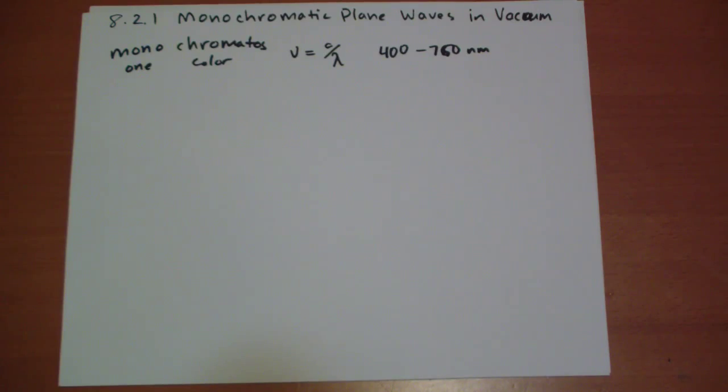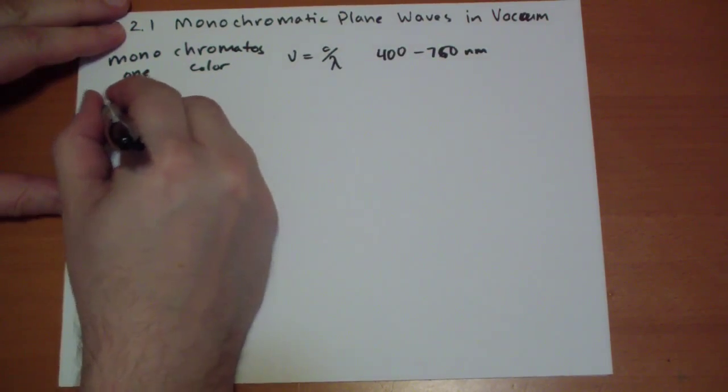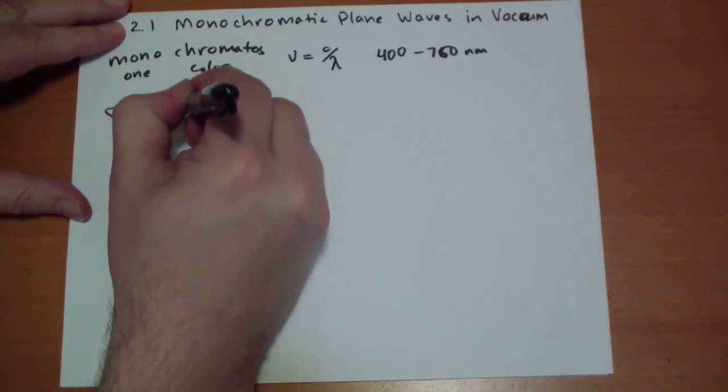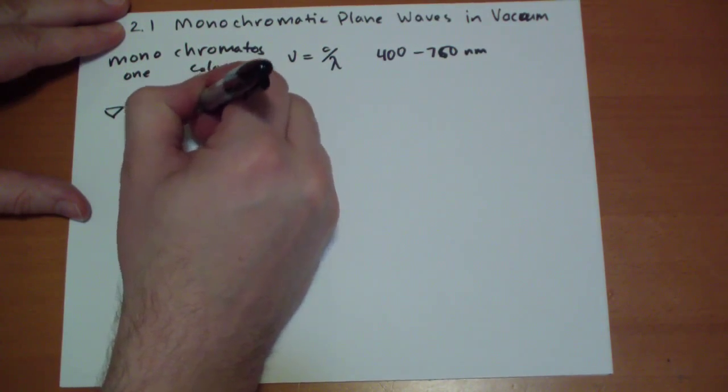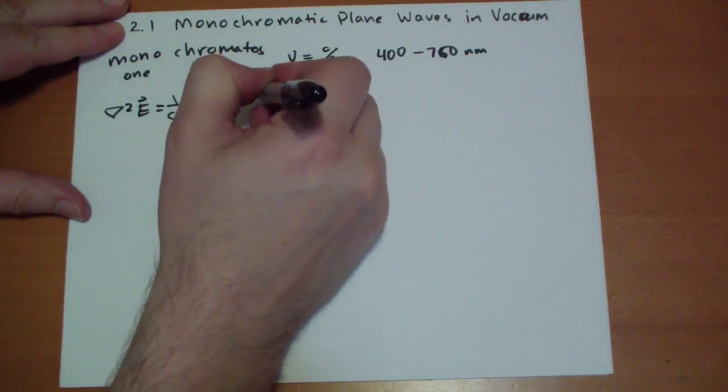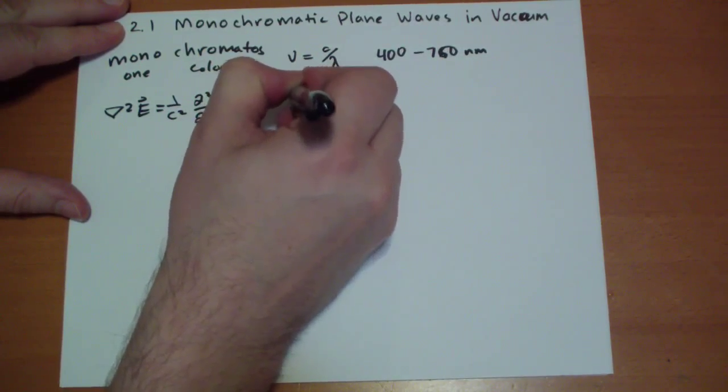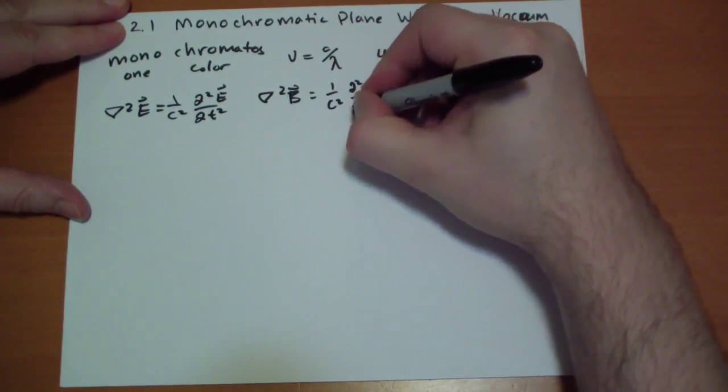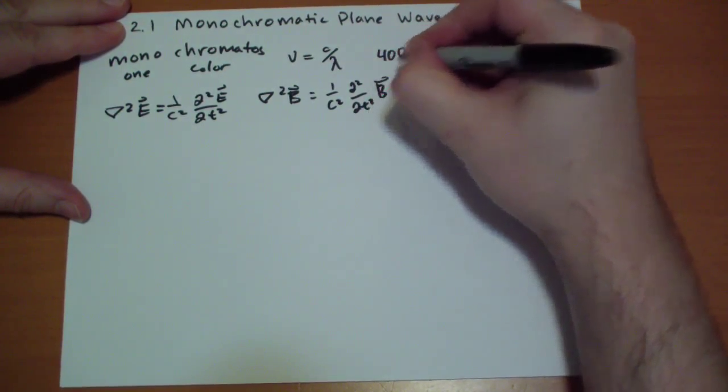The next thing we learn: in a vacuum, Maxwell's laws can be modified into this form by taking the curl of Faraday's law and Ampere's law with Maxwell's corrections in order to charge density current since they're zero. So we get the two equations. We get the Laplacian of the E field is equal to one over C squared times the second derivative with respect to time of the E field. And the same thing for the B field equals one over C squared times the second derivative with respect to time of the B field.